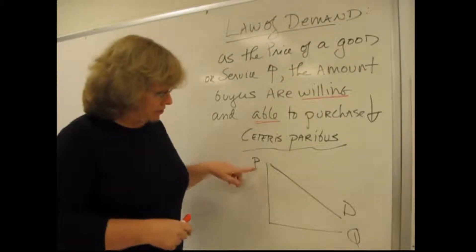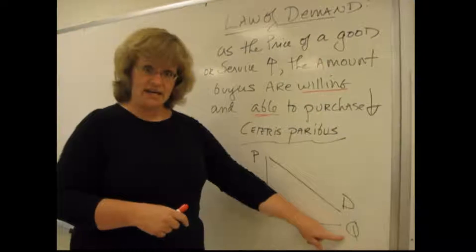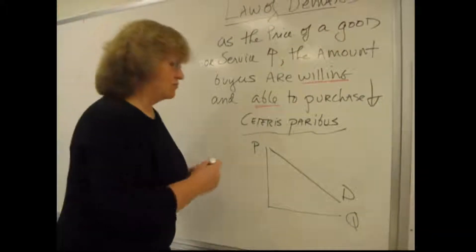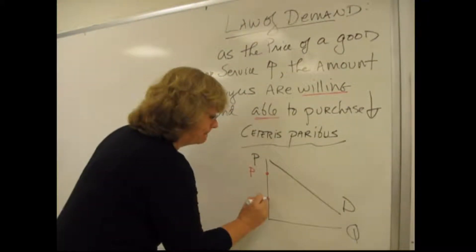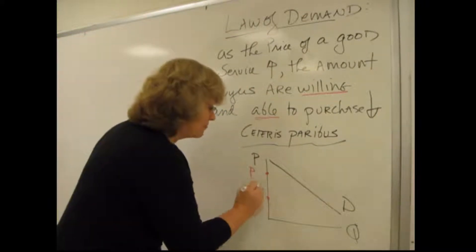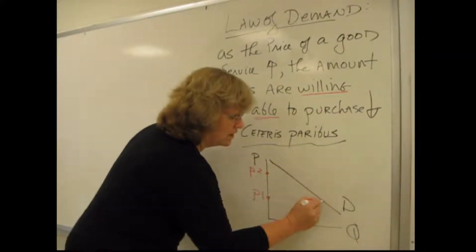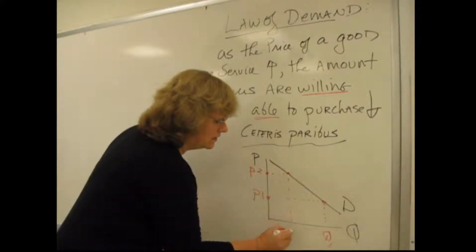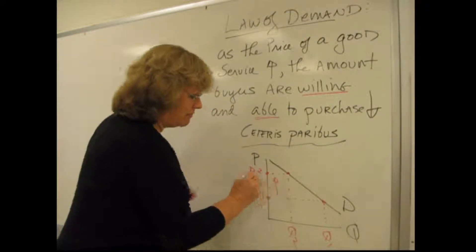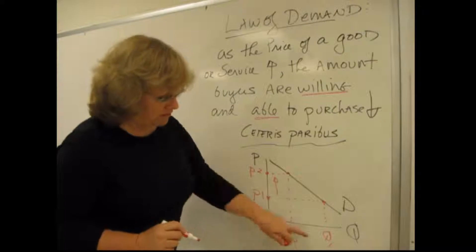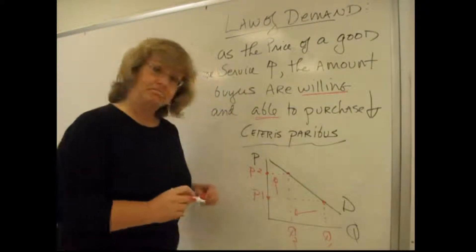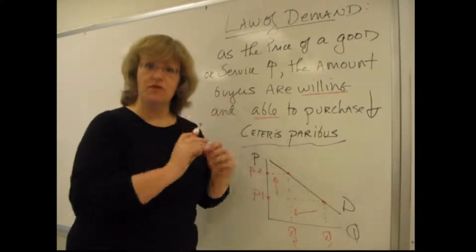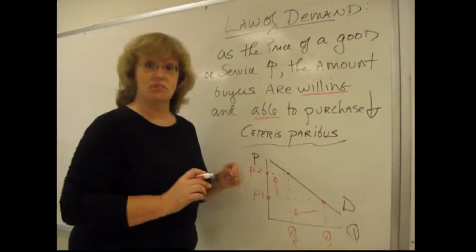This picture down here with price on the vertical axis and quantity on the horizontal axis illustrates this inverse relationship between quantity and price. As the price of the good changes — as the price goes up from price one to price two — the quantity that someone wants to buy falls from Q1 to Q2. That's what the Law of Demand says. It ignores everything else except that very specific relationship between price and the amount that someone wants to buy.